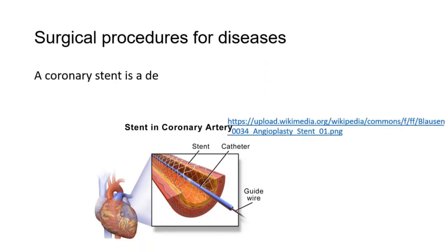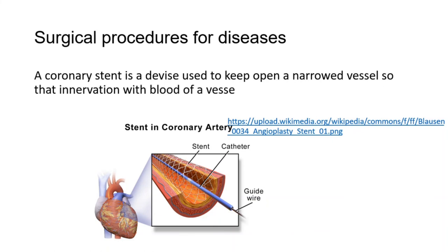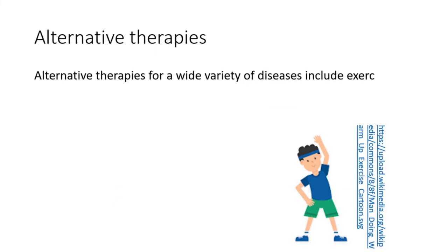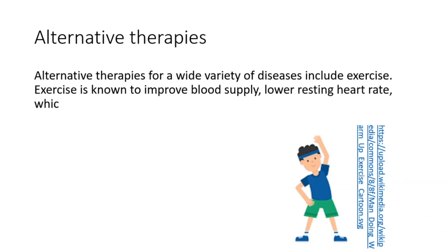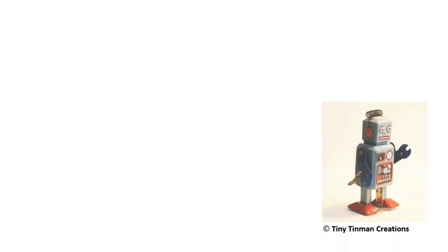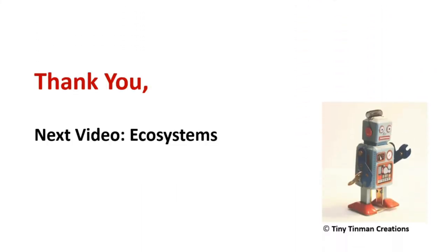Surgical procedures for diseases include the coronary stent, a device used to keep open a narrowed vessel so that blood flow may continue. Alternative therapies for a wide variety of diseases include exercise, which is known to improve blood supply and lower resting heart rate, leading to benefits in the management of diseases such as cardiovascular disease. That is a summary of animal physiology for the BMAT exam. Thank you, learners — the next video is on ecosystems.